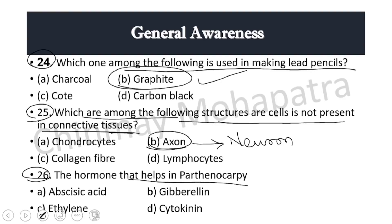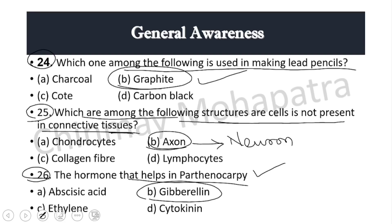Question 26: The hormone that helps in parthenocarpy — that is, formation of offspring without sexual intercourse. The right answer is gibberellin. Gibberellin helps in parthenocarpy.